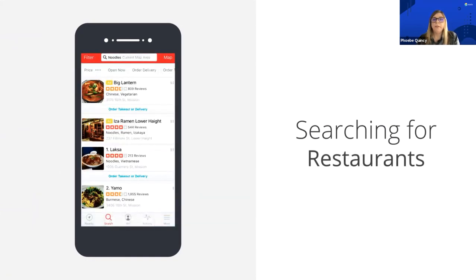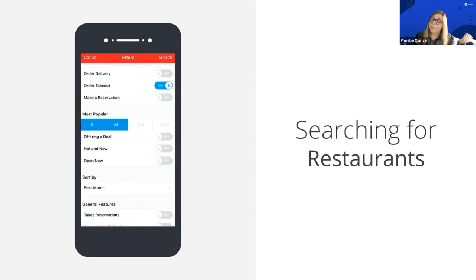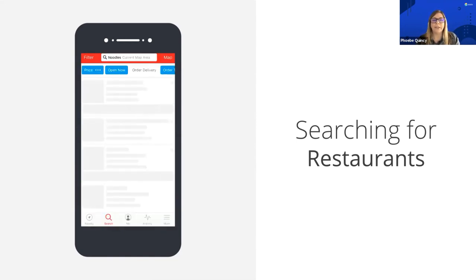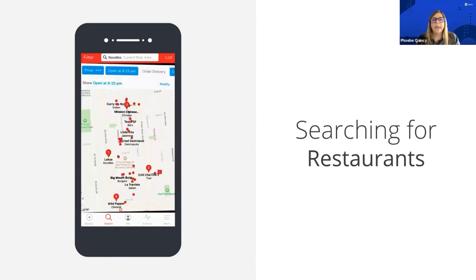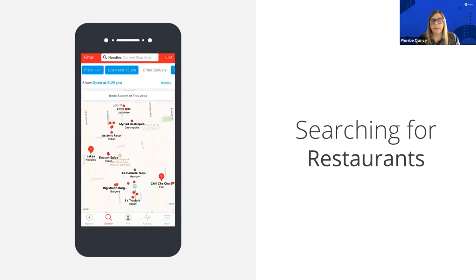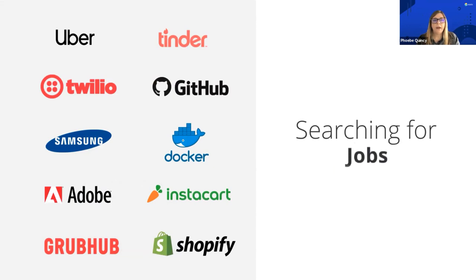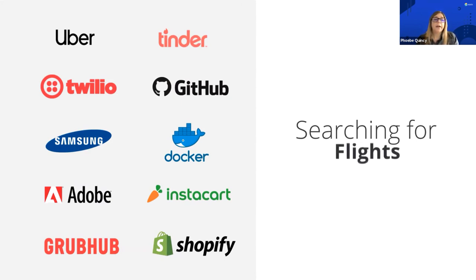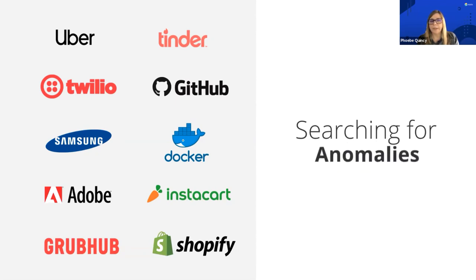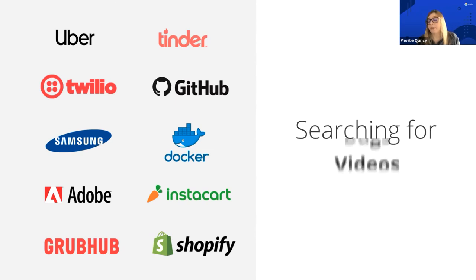If you need to find the best taco at 2am and you go use Yelp, Elastic is actually under the hood driving that restaurant search. Elastic is all over the place — Tinder, GitHub, Docker. You're probably familiar with most of these businesses. It's not something you use as an application yourself on your phone; it's under the hood in the applications you use on a regular basis. Wikipedia is another great example.